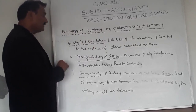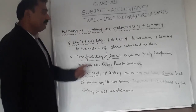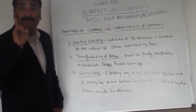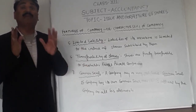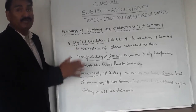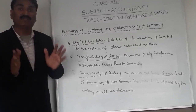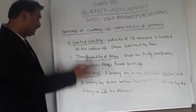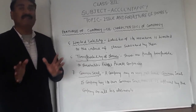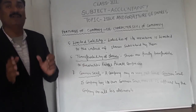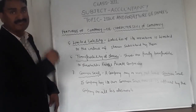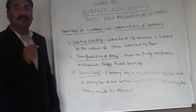The sixth characteristic is transferability of shares. Shares are freely transferable to shareholders in a public company only, because a public company has the right to transfer shares to shareholders, whereas a private company does not have such rights. The seventh and last feature is common seal. Some companies have their own common seal and some may not, but if a company has a common seal, it must affix the seal on their documents.